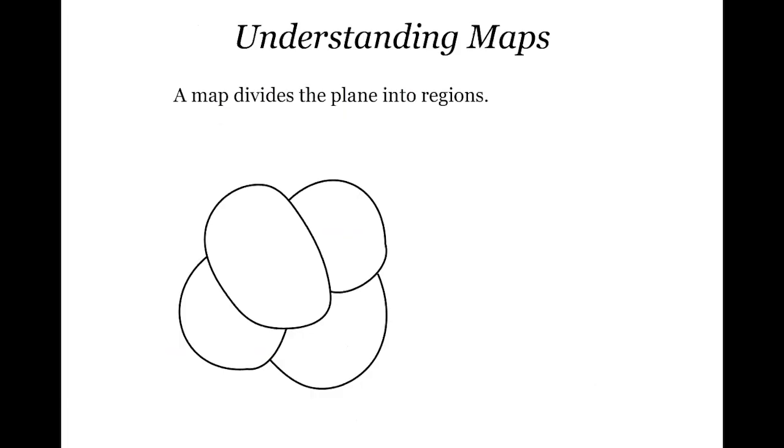I'd like to go back to the question of how we know that four colors are needed. I want to look more closely at the kind of maps we're talking about. A typical map divides the plane into regions — they might be countries, counties, or states. Those regions are also sometimes called faces, and I'll tend to use that word. For example, here I've drawn a very simple map that divides the plane into regions.